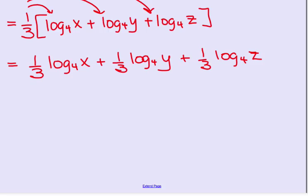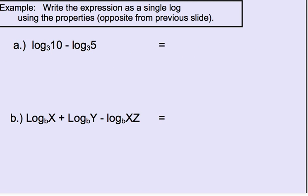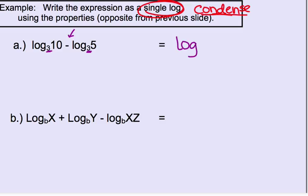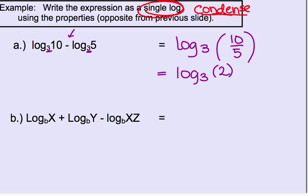Now we do the opposite — we take logarithms and condense them back into one single logarithm using the same properties. When you hear 'condense,' think of combining separate logarithms into one. To combine logarithms, they must have the same base — both here are base 3. The operation between them is subtraction, which is the second property, so to combine them we divide: logarithm base 3 of 10 divided by 5. Since 10 divided by 5 simplifies to 2, our final answer is logarithm base 3 of 2.